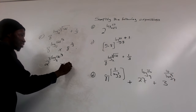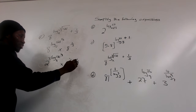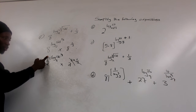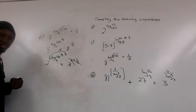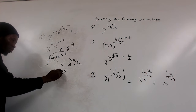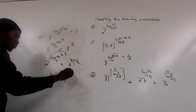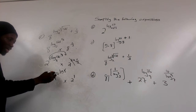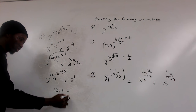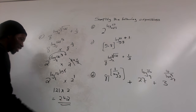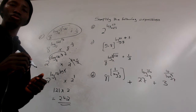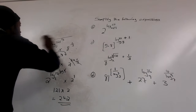For the first term: 8 raised to power log base 2 of (121^(1/3)) — rewrite 8 as 2³. We have (2³) raised to power (1/3) log base 2 of 121. The 3 and 1/3 cancel, leaving 2 raised to power log base 2 of 121. Since the bases match, this equals 121. So the total is 121 multiplied by 2, giving us 242. The final answer for part c is 242.